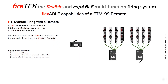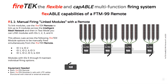First, manually firing with the remote. The FireTech remote can establish an Intelligent Mesh network with up to 99 additional modules. Pyrotechnic cues of the FireTech modules can be manually fired from the remote across all networked modules. The remote allows you to manually fire linked modules. When in test mode, you can link the modules with IDs 1, 2, 3, and 4.